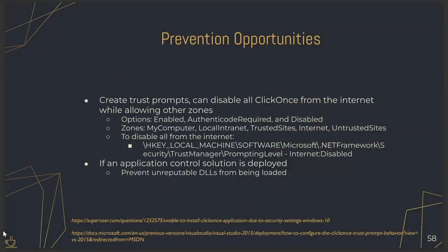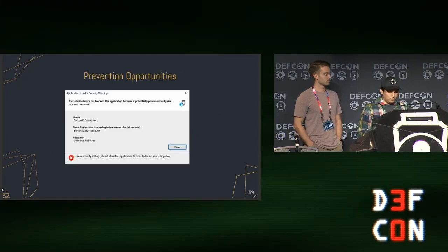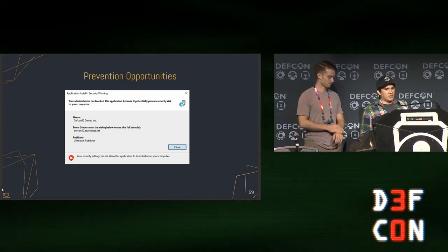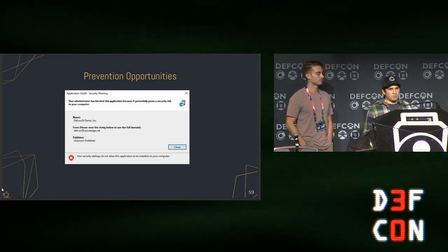For prevention, you can deploy registry settings via GPO for prompting trust levels with ClickOnce across zones: my computer, local intranet, trusted sites, internet, and untrusted sites. You can require authentic code or completely disable ClickOnce. If application control is deployed, look for unsigned applications attempting to load. Disabling the internet zone means anything from the internet won't even give users an opportunity to run it — it's just closed.